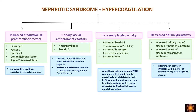Another manifestation of nephrotic syndrome is hypercoagulation. As a reflex for proteinuria, the liver increases protein synthesis, producing more prothrombotic factors such as fibrinogen, factor 5, factor 7, von Willebrand factor, and alpha-2 macroglobulins, which promote thrombosis. Additionally, there is urinary loss of antithrombotic factors.